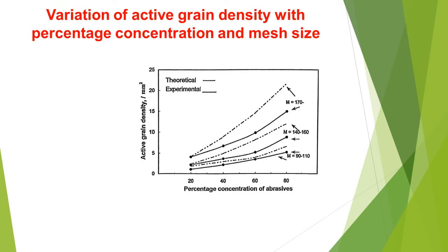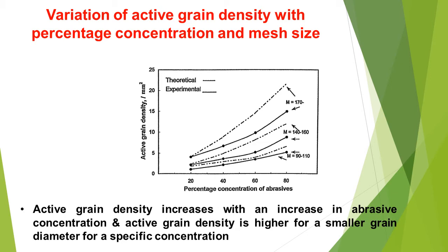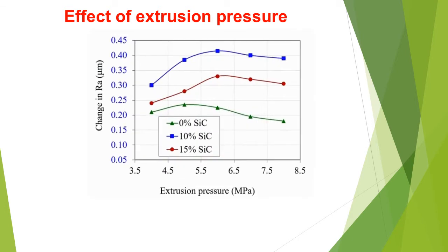The variation of active grain density with percentage of concentration and grain size is understood from this particular graph. Active grain density increases with an increase in abrasive concentration, and active grain density is higher for a smaller grain diameter at a specific concentration.